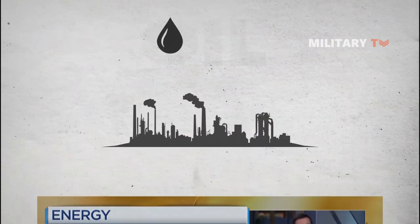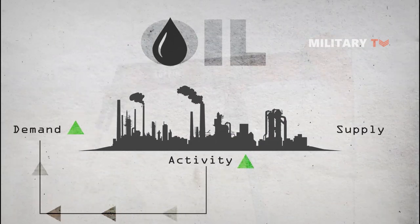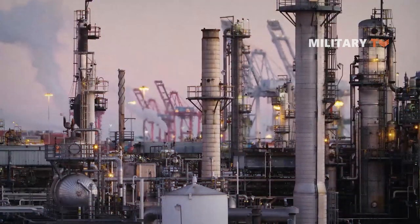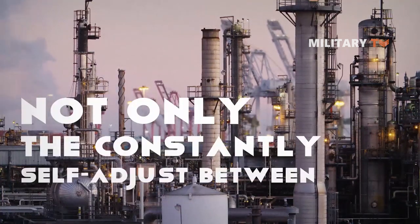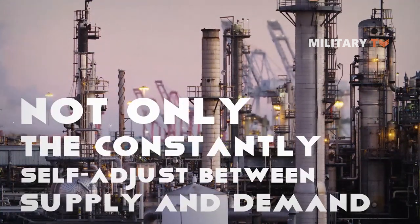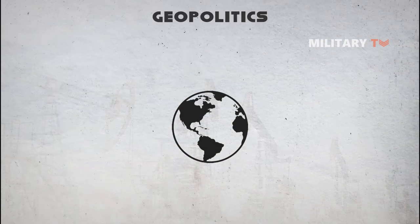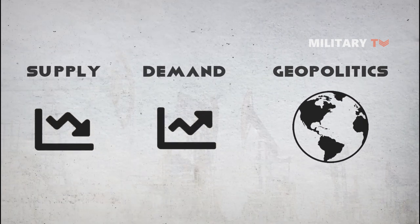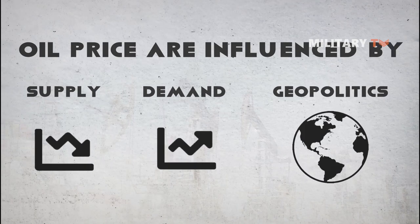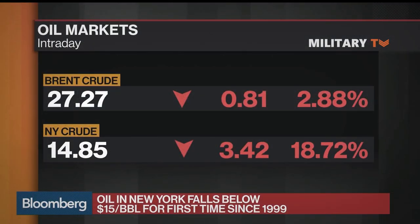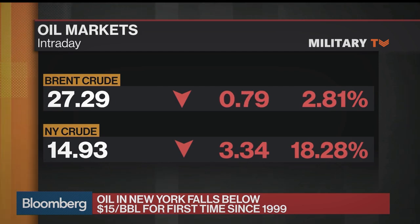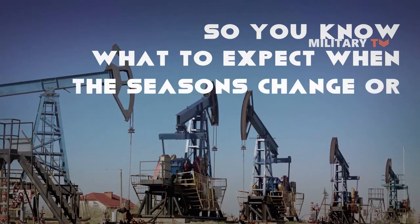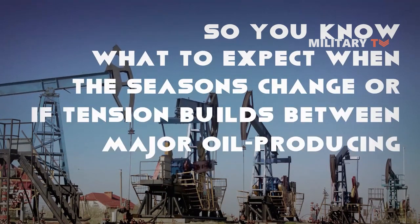To the basic factors that decide the international oil price, some experts believe it lies mainly in the supply and demand. But behind the international oil price fluctuation existed not only the constantly self-adjusting between supply and demand on the world crude oil market, but also the strength competition between nations, causing the diversity and complexity of the factors which affected the international oil price fluctuation. We are going to present comprehensively the main factors which determine the international oil price fluctuation, so you know what to expect when the seasons change or if tensions build between major oil-producing countries.